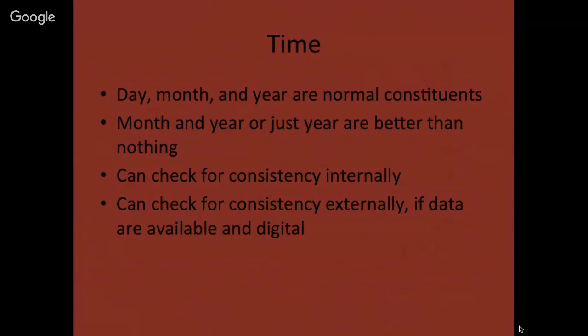For time, we usually specify day, month, and year — month and year, or just year, are better than nothing. We can check for consistency internally, and I'll show examples shortly. We can also check time consistency externally if the necessary data are available, and I'll show an example of that as well.